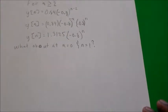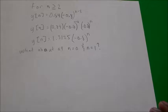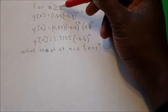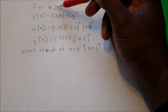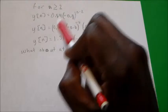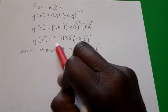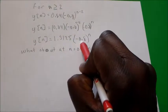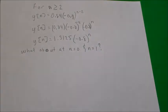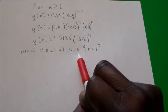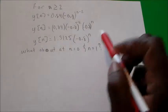Now that you're caught up, at the very end of the prior video, we found a solution, but that solution only encompasses n greater than or equal to 2. That portion of the solution is equal to 1.3125 times negative 0.8 raised to the nth power. So the question is: how do we find the solution when n is equal to 0 and when n is equal to 1?